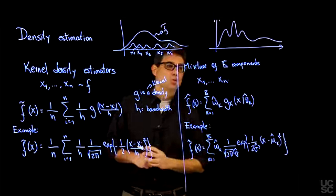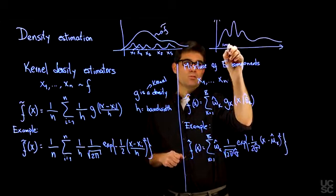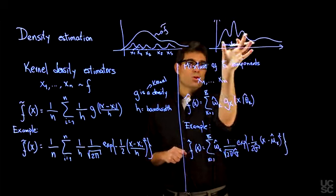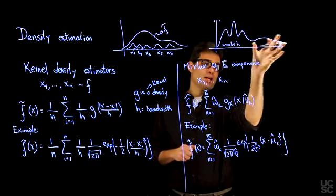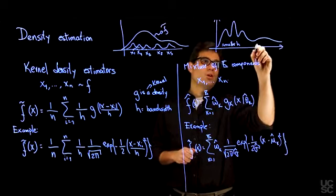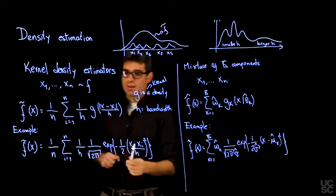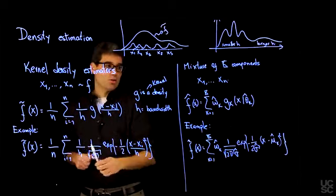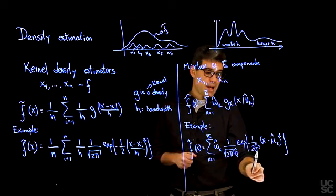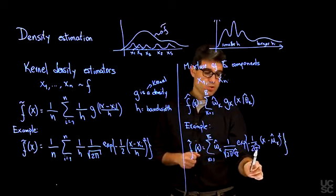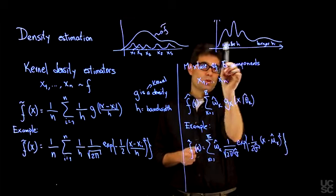You can have situations, for example, where you have a density that is very highly multimodal here and then becomes much smoother in another region. In this area, you would want a smaller h, a smaller bandwidth so that you can capture this many peaks. And in this area where things are very smooth and not changing very often, you would want a larger h. That is not something that you can easily do with kernel density estimators, but it's something that you can very easily do using mixture of normals simply by allowing the variance of each one of the components to change.